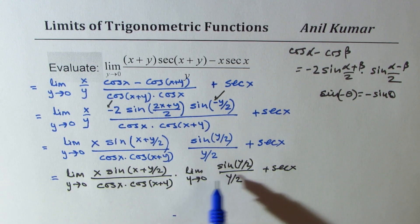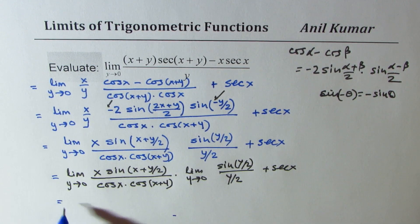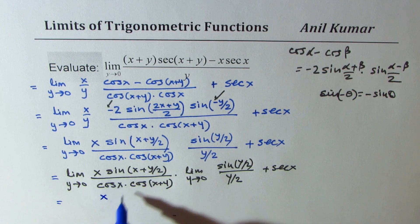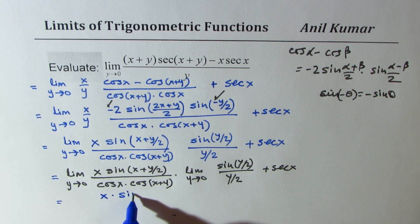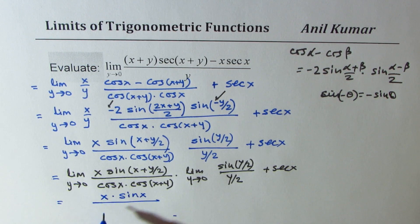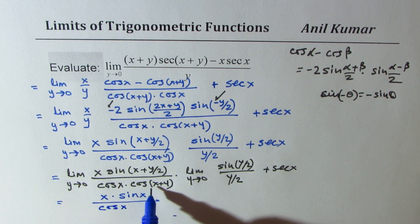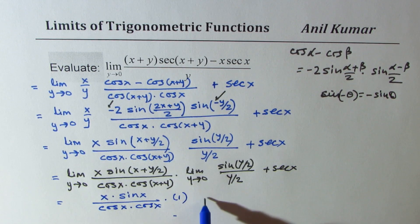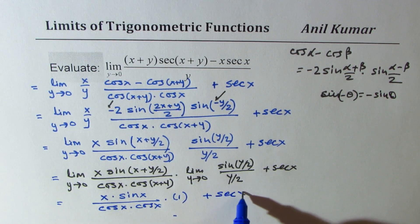Now the limit of this term is 1. And here if I substitute y equals to 0, I get x times sine x over this is cos x, that is also cos x. This is 1 plus secant x.